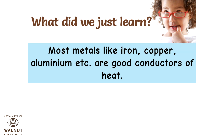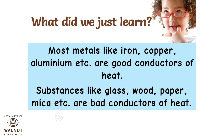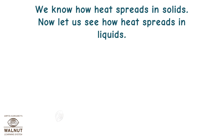Materials through which heat can travel quickly by conduction are called good conductors of heat. Most metals like iron, copper, aluminium, etc. are good conductors of heat. Substances like glass, wood, paper, mica, etc. are bad conductors of heat. Now let us see how heat spreads in liquids.